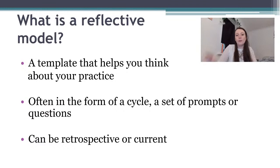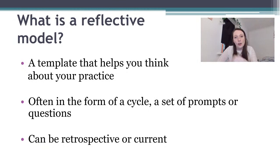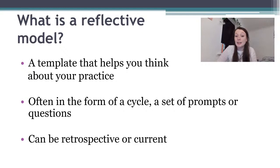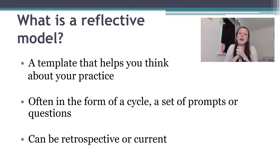Reflective models quite often come in the form of a cycle. The Driscoll model we're looking at today is a cycle — very cyclical in nature. You start thinking about what went wrong, what went right, how you can do it better next time. Or it could be a set of prompts or questions, which is what the Johns model contains. It really depends on you and how you like to reflect most. Reflective models can be retrospective or current — retrospective means going back to a clinical experience you've had in the past, or current means thinking about how you're doing something as it's happening.